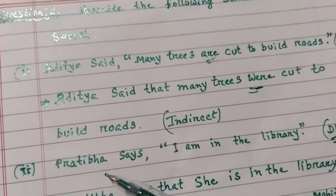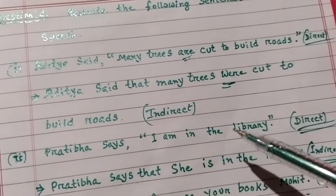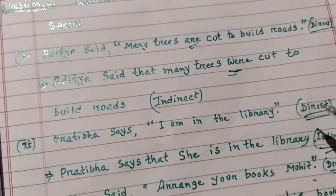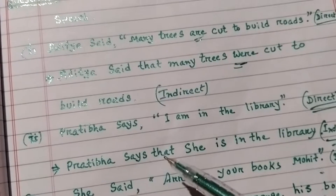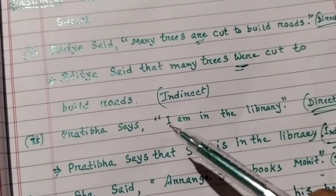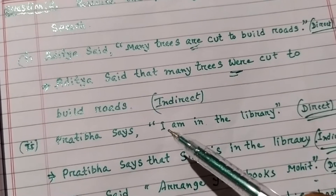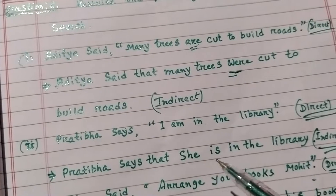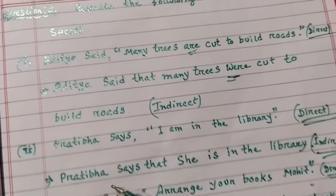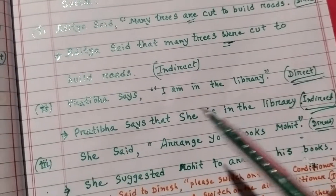Q2 Number 2: Direct speech — 'Pratibha says, I am in the library.' In indirect speech: 'Pratibha says that she is in the library.' Since Pratibha herself says 'I am', we change it to 'she is' in indirect speech.